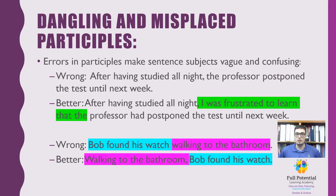Another example below is a misplaced participle: 'Bob found his watch walking to the bathroom.' It sounds confusing because we can't believe a watch could walk to the bathroom, so we have to rearrange it to say, 'Walking back to the bathroom, Bob found his watch.' By checking for dangling and misplaced participles, we can understand how sentences could be wrong in this way and correct them on tests and exams to ensure we get the best possible score.